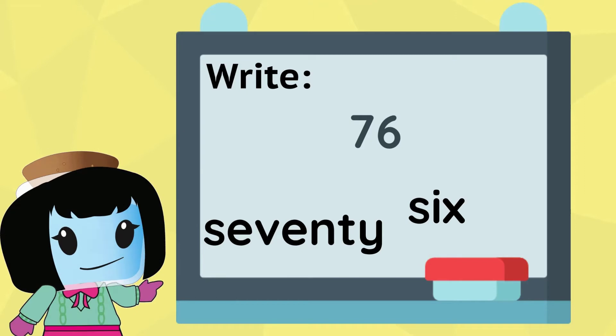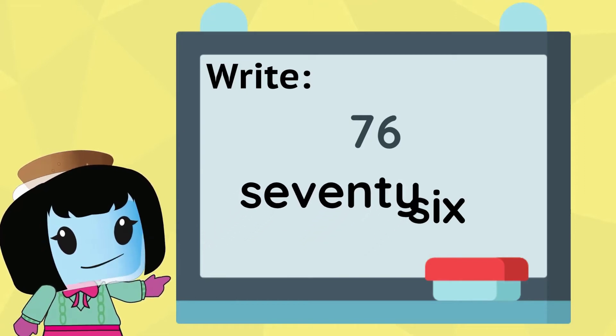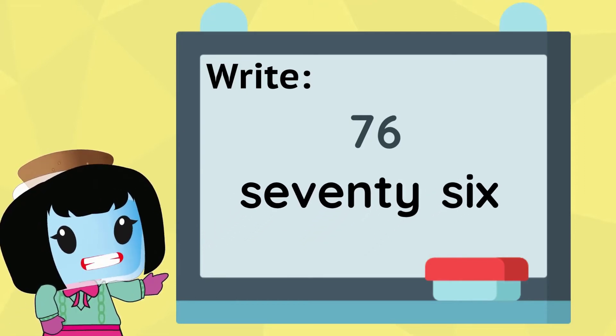Write the two parts together. Seventy, six. Don't forget to add the hyphen.